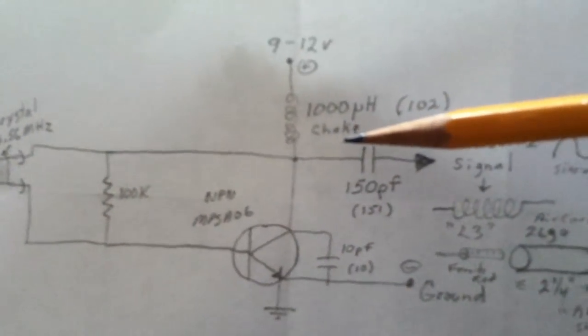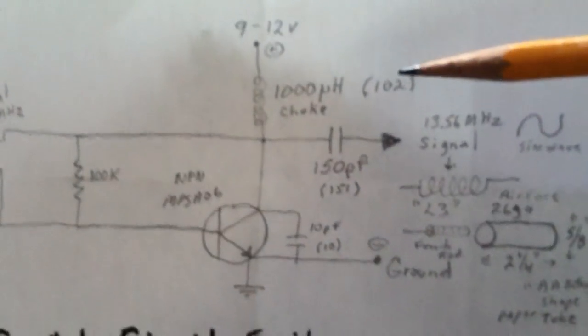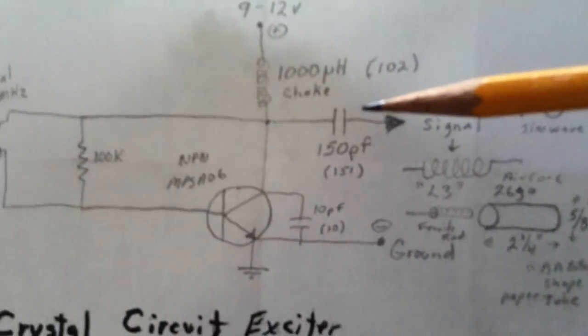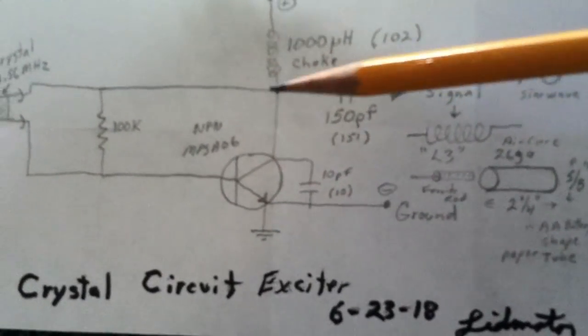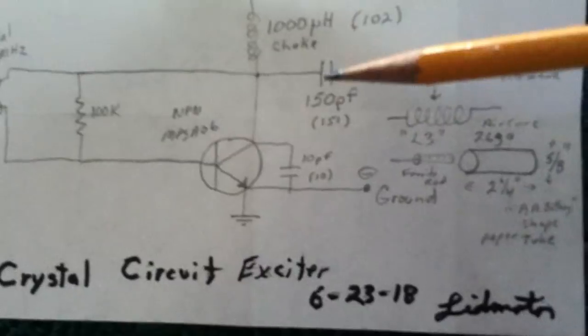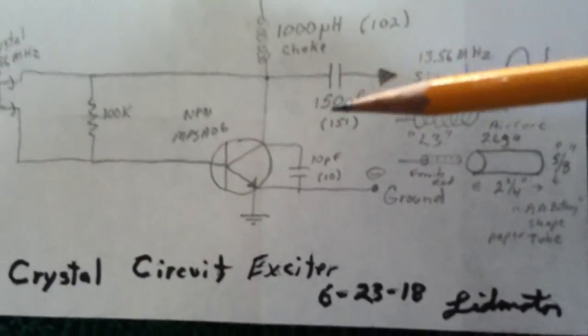The best inductor is a 1000 microhenry choke. It's a 102. You can use a number of these decoupling or coupling capacitors here.